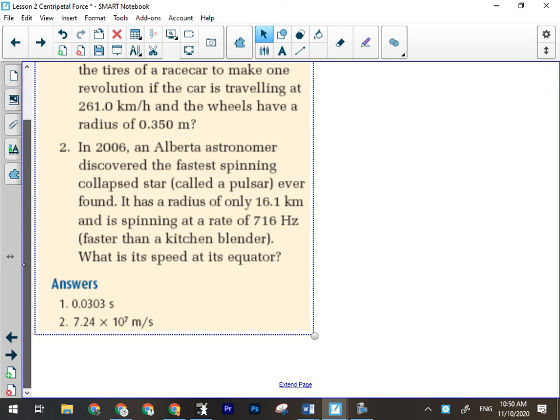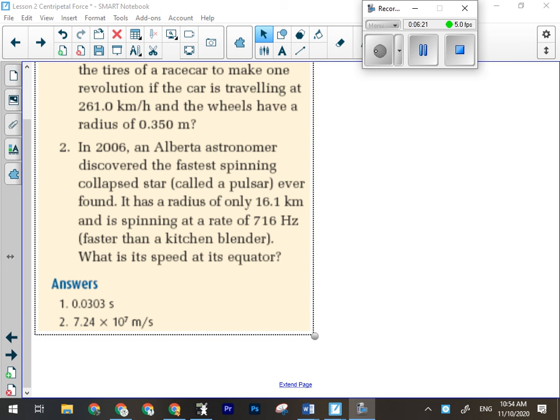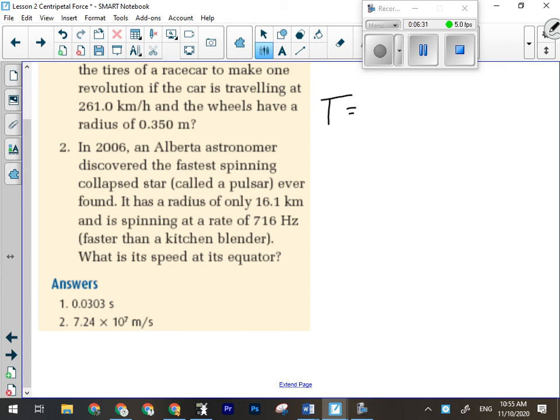Try number two. So this question reviews a little bit of the stuff we did the first day, which is the difference between period and frequency. Remember that they are the inverse of each other. Period is the time for one revolution - that would be seconds per rotation or revolution or cycle. Whereas frequency is revolutions per second, which is why T equals 1 over F, and F equals 1 over T.